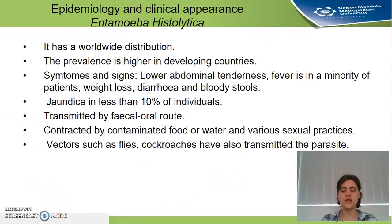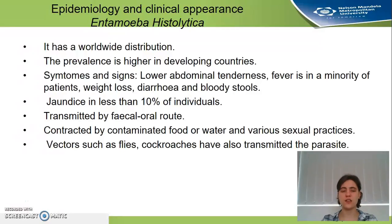The epidemiology of Entamoeba histolytica shows it has a worldwide distribution, with higher prevalence in developing countries due to poorer health infrastructure. Symptoms include lower abdominal tenderness, fever in a minority of patients, weight loss, diarrhea, and bloody stools. Jaundice can be seen in 10% of individuals. It is transmitted fecal-orally and can be contracted through food, water, and various sexual practices.